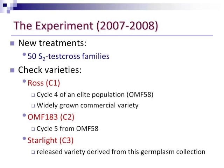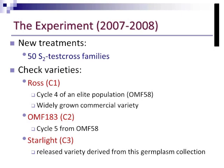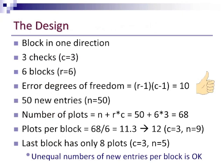We did a couple of different experiments that year, but I'll talk about one of them. One of the augmented designs included 50 new S2 test cross families that had never been tested before. We had three check varieties. The first two, ROS and OMF 183, came from our elite population; OMF 58 represented two different cycles of selection of that elite population. We also had a variety called Starlight, which had been commercially released and derived from the same germplasm pool we were evaluating. So we wanted to ensure our new entries would be superior to what was already commercially available.